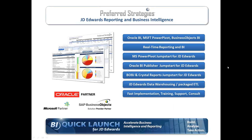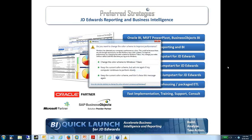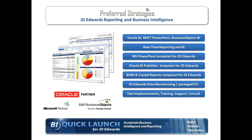Overview of Preferred Strategies: we've been around since 2002, focusing primarily on J.D. Edwards as the ERP. We only work with reporting and business intelligence software — that's our niche. The three primary softwares we work with are Oracle BI and BI Publisher, Microsoft PowerPivot and other Microsoft BI reporting software, as well as Business Objects and Crystal Reports. We do have other webinars for those.